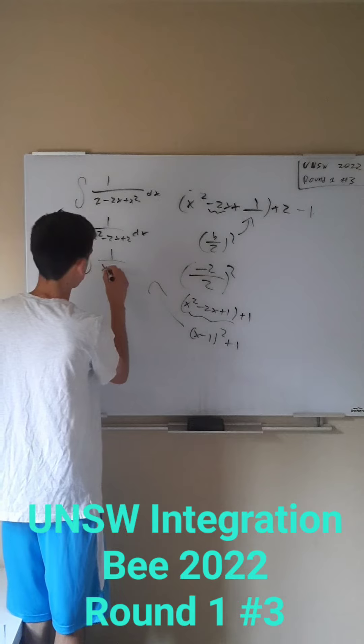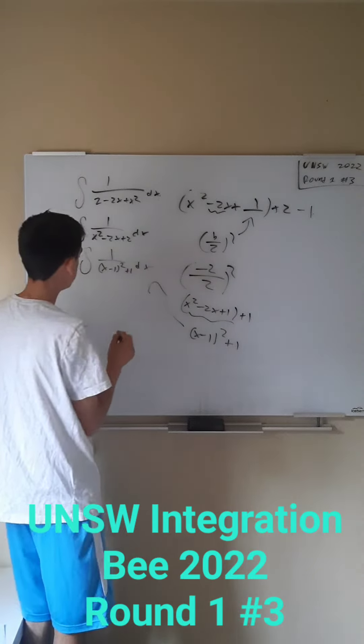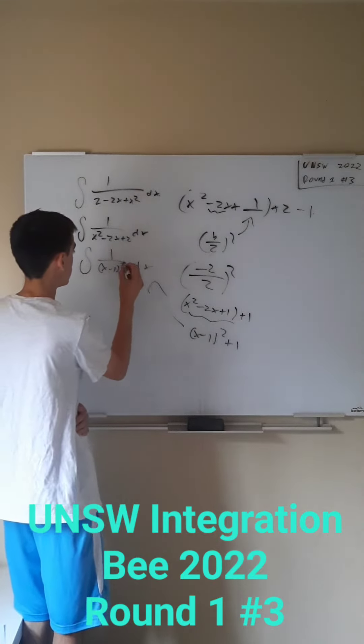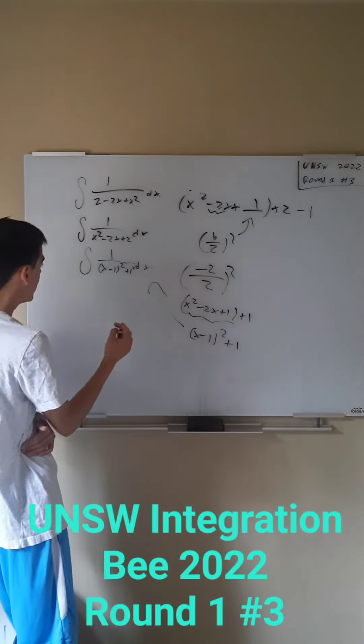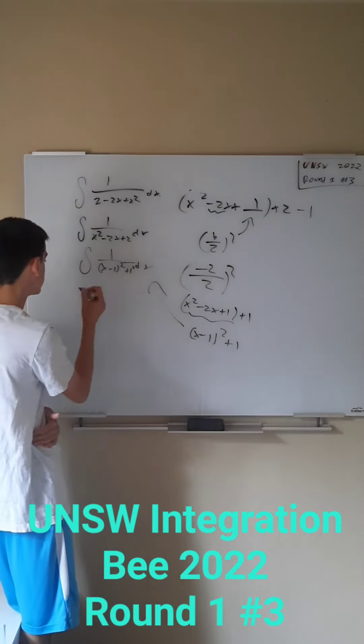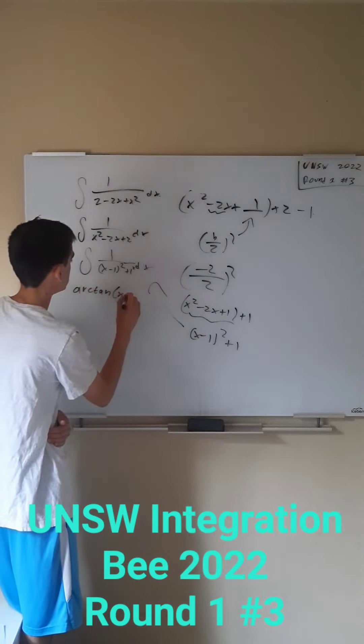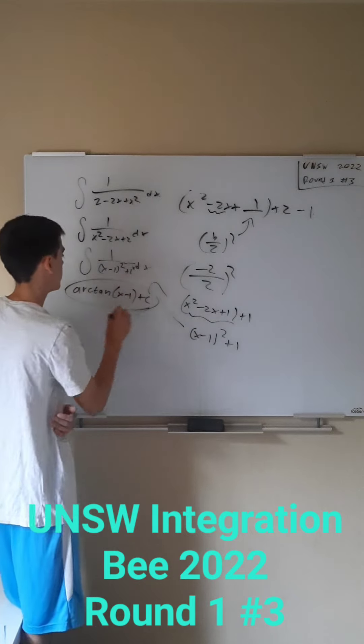So we have 1 over x minus 1 squared plus 1 dx. It's still not fully obvious what to do here, however let me just write a squared right here because 1 equals 1 squared. Now you can see this is just arctangent so this will equal arctangent of x minus 1 over 1, but that's just x minus 1 and you get your plus C and you're set.